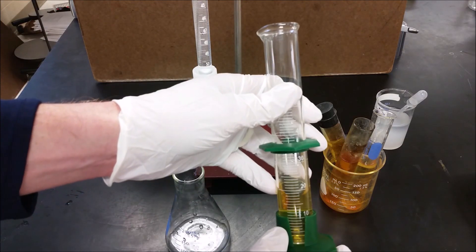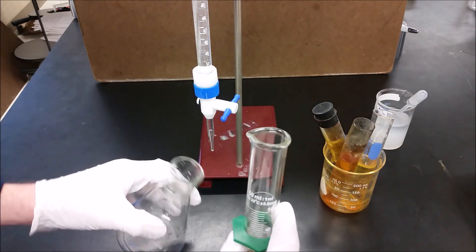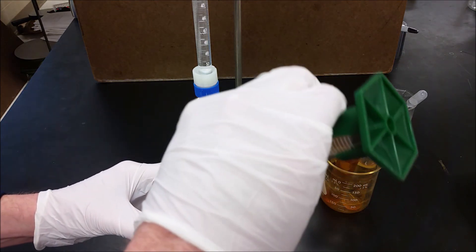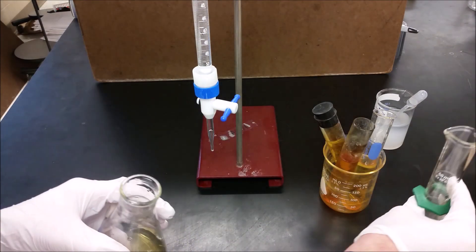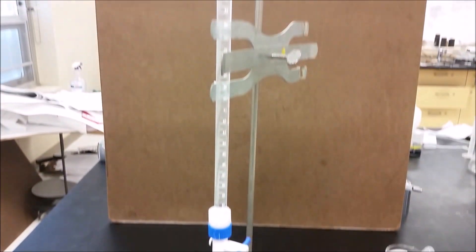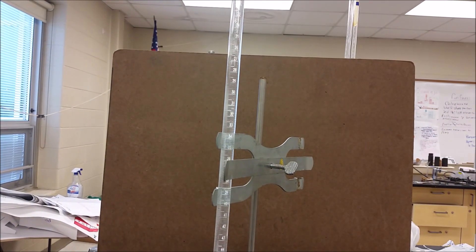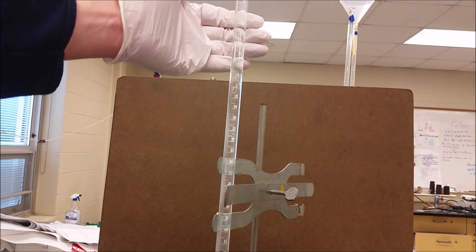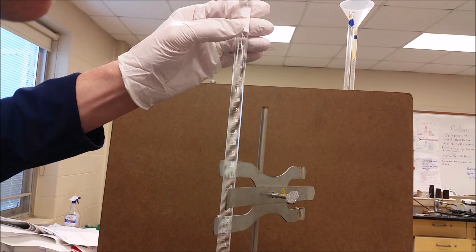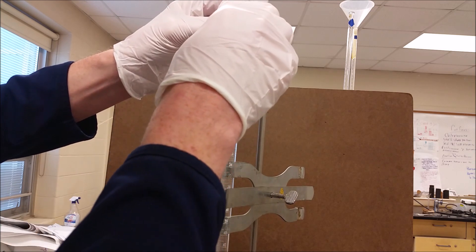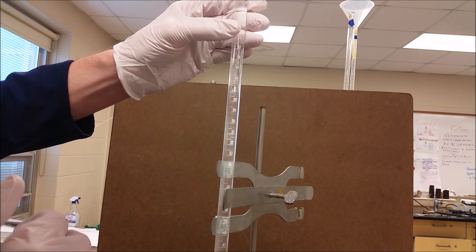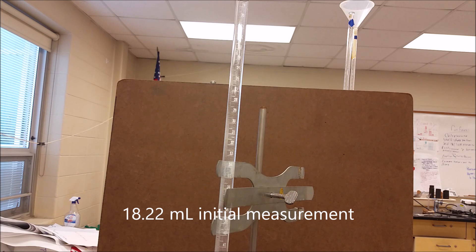So here we've measured out 20 milliliters plus or minus 0.1 that we just prepared, and I'm going to go ahead and add that to this flask. Now the yellow color you're seeing there is from the triiodide that we formed. So we're now going to do titration with that. In order to start, we need to take a look at what our initial reading is. Here's our burette. We are just under 18, so I would read that as 18.22 milliliters.